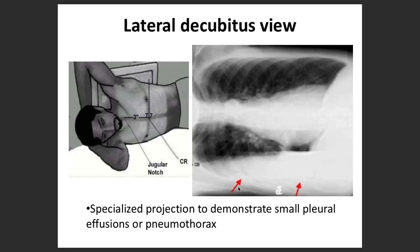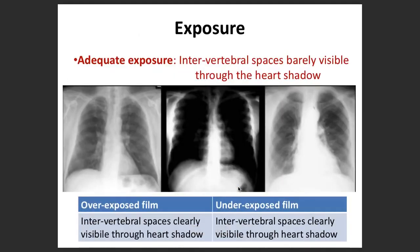About exposure: adequate exposure is when intervertebral spaces are barely visible through the heart shadow. An overexposed film is one in which the intervertebral discs or spaces are clearly visible through the heart shadow. An underexposed film is the opposite.